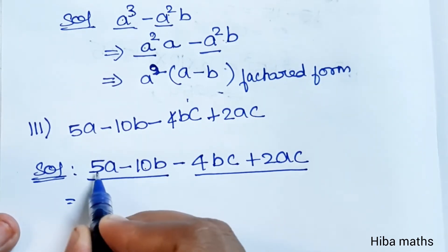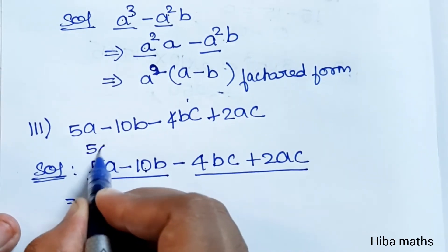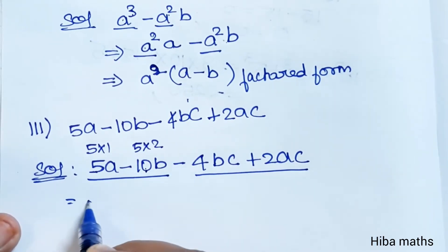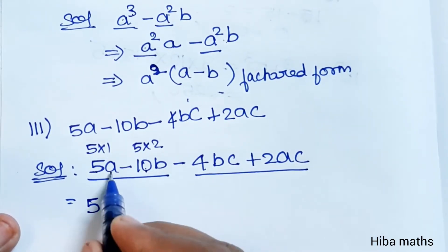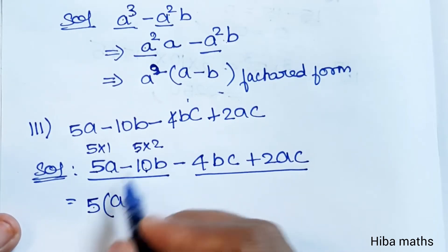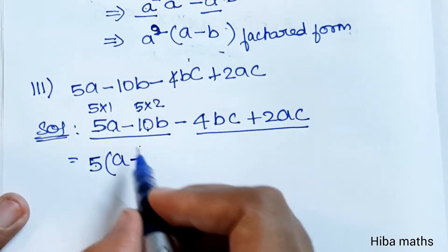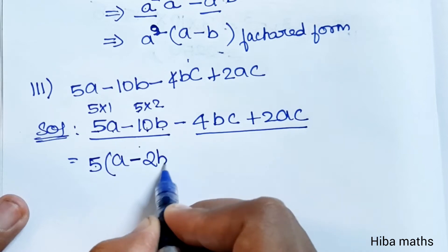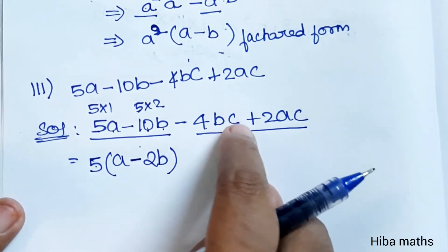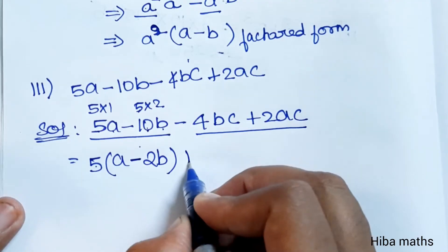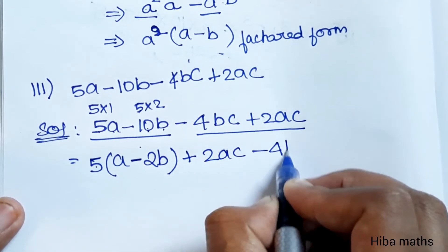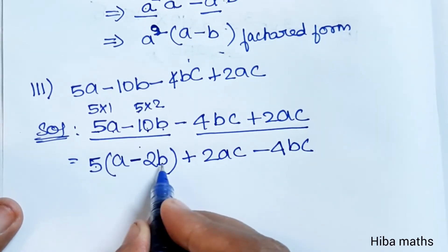For the first pair, 5a minus 10b: take 5 as common, giving 5 into bracket a minus 2b. For the second pair, 2ac minus 4bc: take 2c as common. 4 is 2 into 2, so 2c is the common factor, giving 2c into bracket a minus 2b.